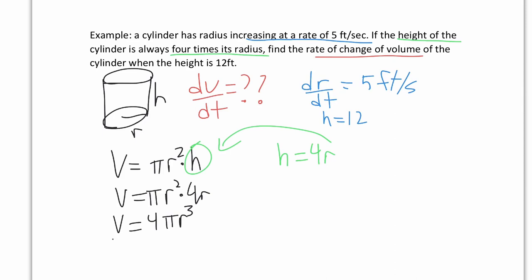Notice we now have an equation with just one variable on the right-hand side. So when we take the derivative dV/dt, we get 4π as the constant times 3r² dr/dt. This is much easier than if we would have had to use the product rule. Now we have dr/dt = 5.